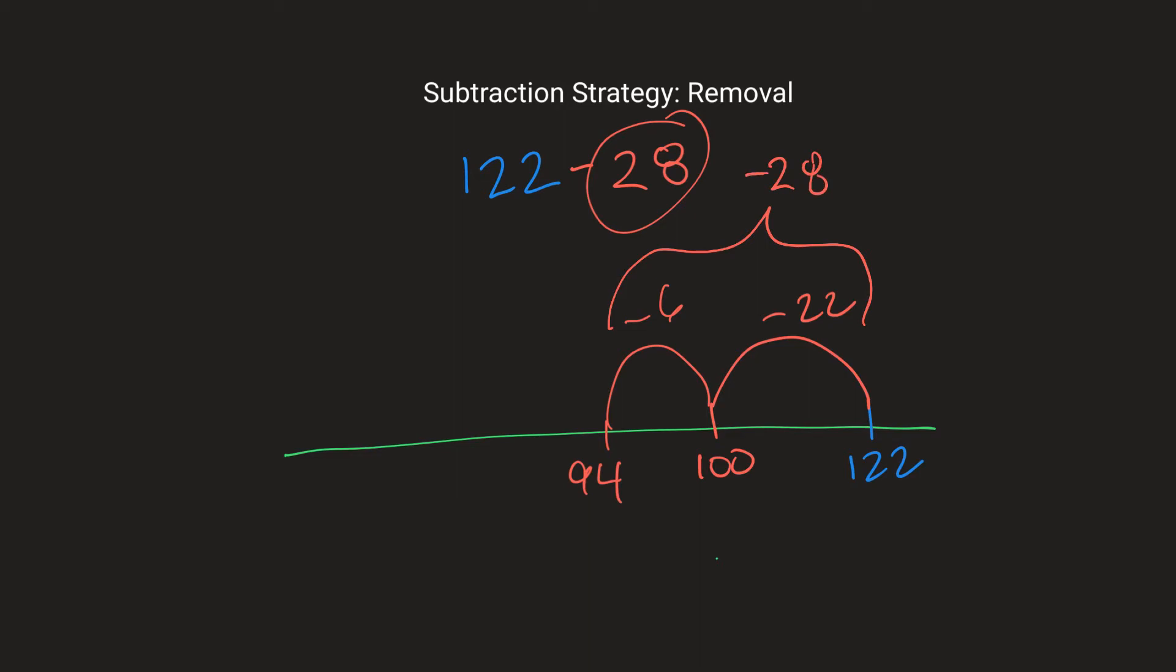So we've subtracted 28 from 122 and we got the answer 94. So our solution to this, the difference between 122 minus 28 is 94. So this strategy is called removal but we can kind of think about it as removal in chunks.